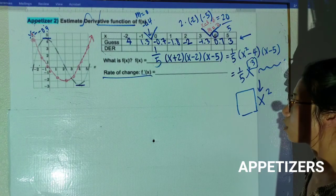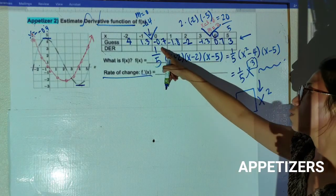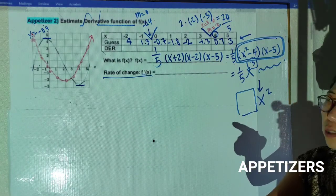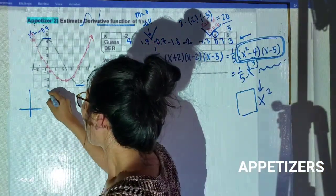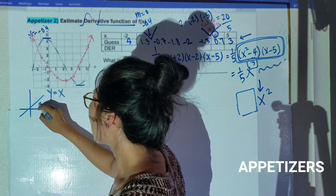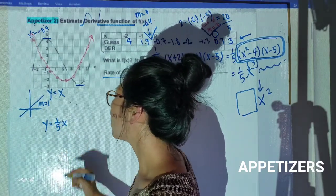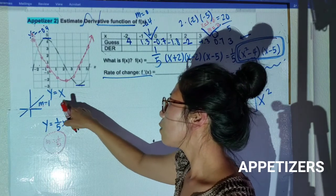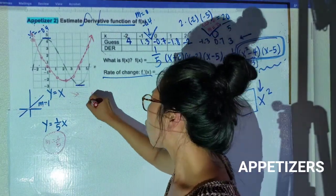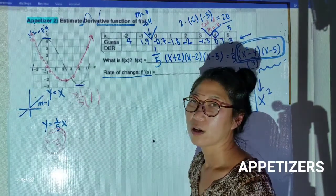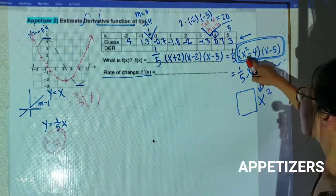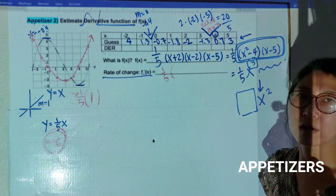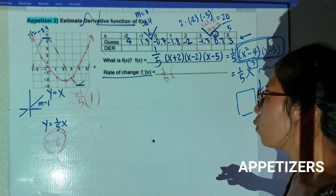Now let's prove it algebraically with the rate of change. In order to keep it cleaner, I'm going to do the rate of change on the expanded polynomial without the 1/5 factor, and multiply by 1/5 at the end. Think of it this way: if y = x, the slope is 1; if y = (1/5)x, the slope is 1/5. So I can save the 1/5 for the very end.